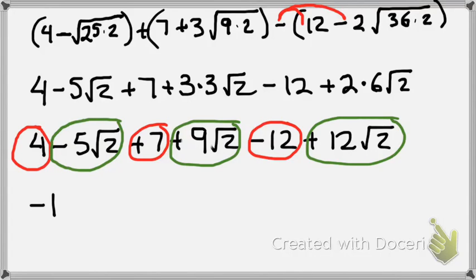So what's negative 5 plus 9? 4 root 2, plus 12 root 2. So 16 root 2.